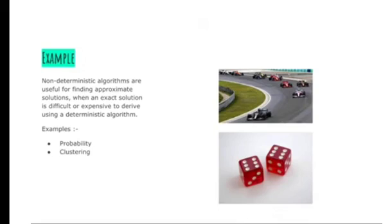Examples of non-deterministic algorithms: they are useful for finding approximate solutions when an exact solution is difficult or expensive to derive using a deterministic algorithm. Some examples are probability and clustering — probability like rolling a dice, and clustering for face recognition.